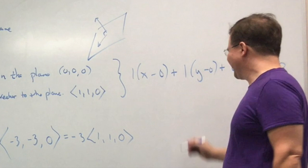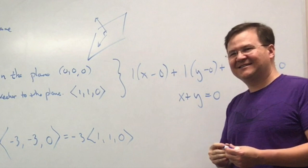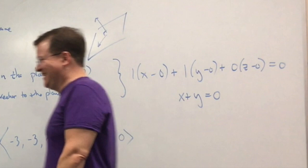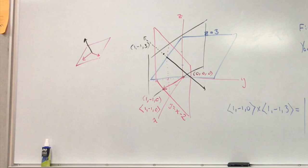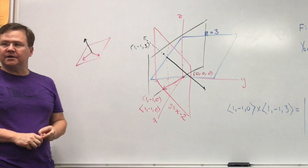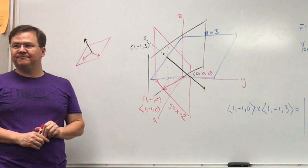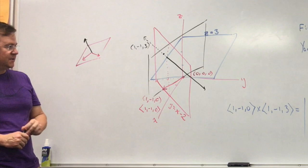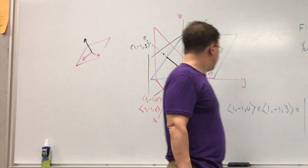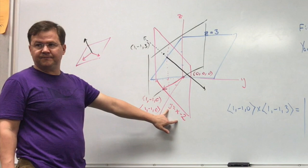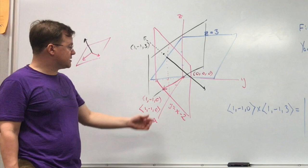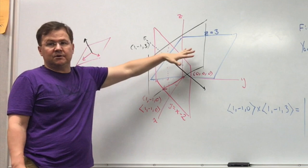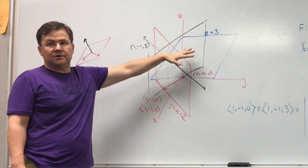That's exactly what I said — y equals negative x. The vector one, negative one, zero that the student found is actually in the plane we're looking for, and also in the blue plane, which means it's in the intersection of those two planes.